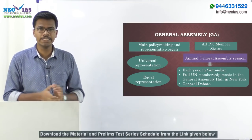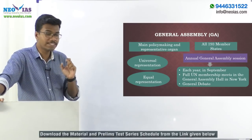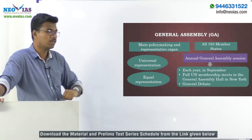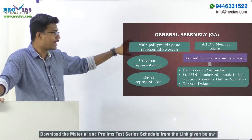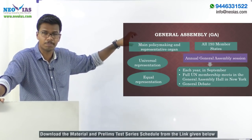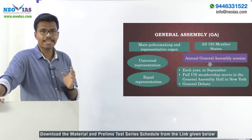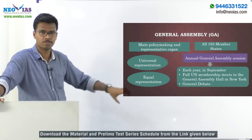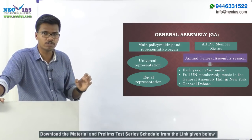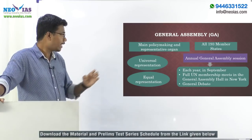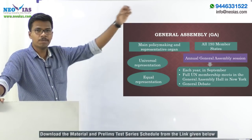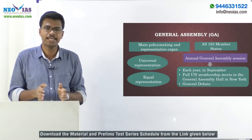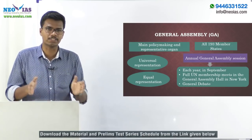First, let us start with the General Assembly. The General Assembly is the main policy-making and representative organ of the United Nations and it has all 193 UN member states as its members. The General Assembly has universal representation, and importantly, it has equal representation — every member has a single vote within the UN General Assembly.